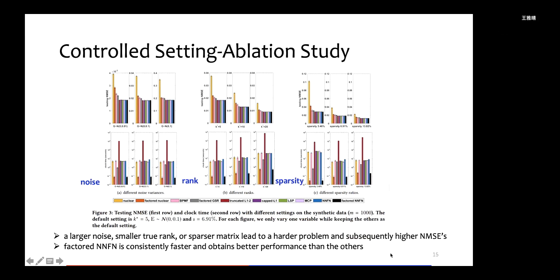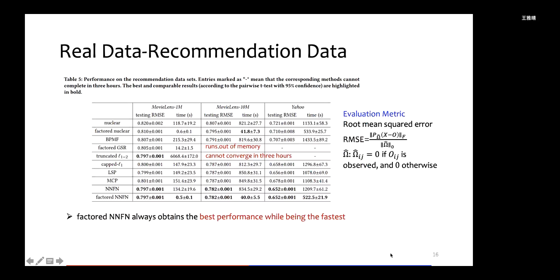We then conduct ablation study. We mainly consider three settings: different noise variances, different ranks, and different sparsity ratios. As you can see, larger noise, smaller true rank, or sparser matrix leads to a harder problem. Subsequently, we got higher NMSE. But one observation is consistent: factored NNFN can obtain better recovery performance while being the fastest.